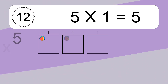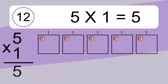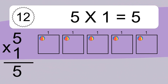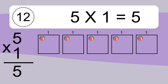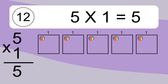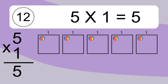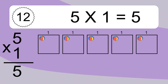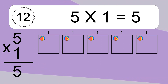5 times 1 equals what? 5 times 1 equals 5. We have 5 boxes, and each box has 1 colorful ball inside. If you count all the balls in all the boxes together, you will have 5 times 1 balls. This equals 5 balls.